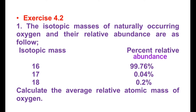Exercise 4.2, number 1. The isotopic masses of naturally occurring oxygen and their relative abundances are given. Calculate the average related atomic mass of oxygen.